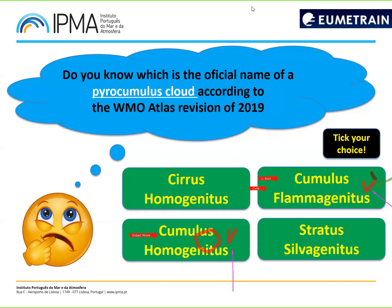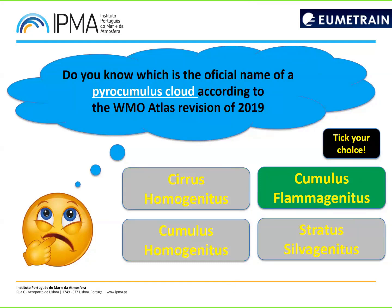Participants are converging on the cumulus options. We can eliminate Cirrus and Stratus. So it comes down to homogenitus or flammogenitus. The correct answer is Cumulus flammogenitus. In 2019, the pyrocumulus cloud was officially included in the WMO Cloud Atlas for the first time, and Cumulus flammogenitus was the name chosen for the pyrocumulus. So it has been official for a couple of years now.